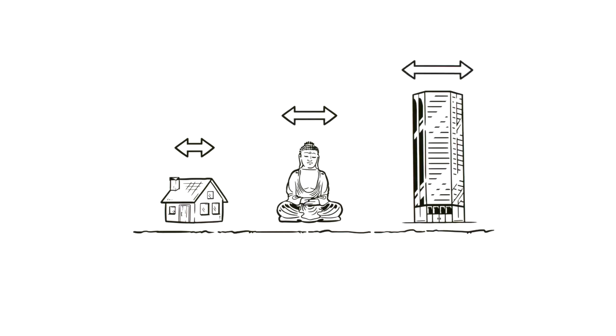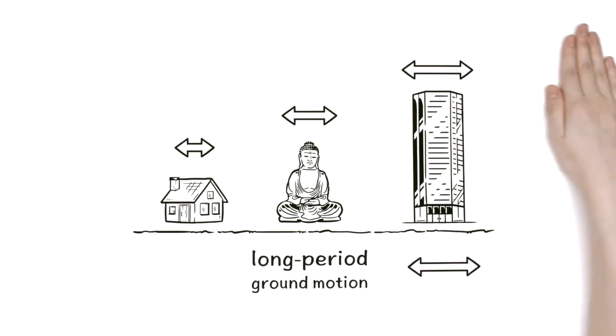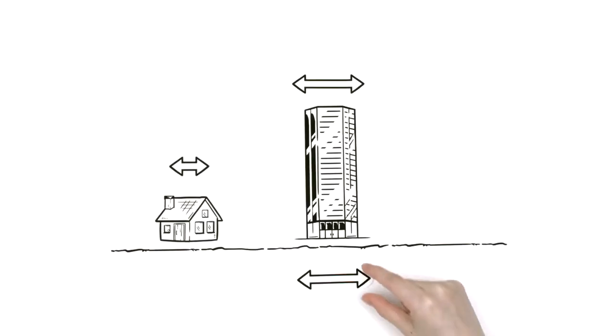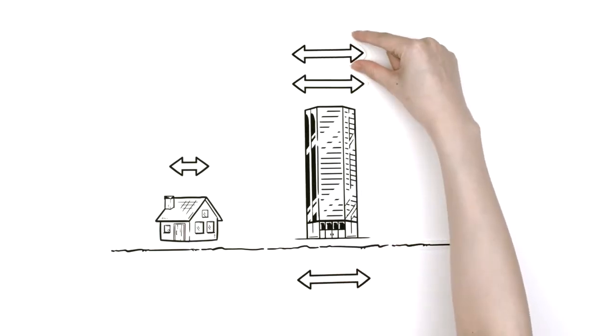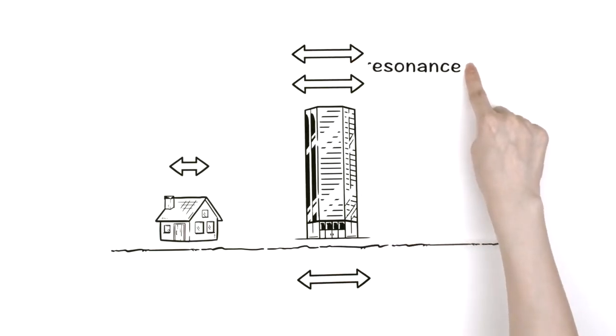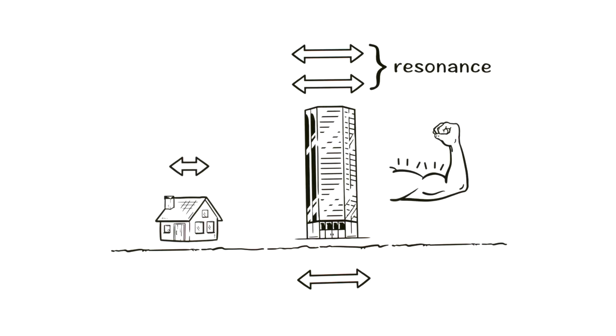Each building has its own period, which depends on the type of construction and height. Higher buildings have longer periods, and these are more likely to be the same as the ground motion. When a building's period is the same as that of the ground, this causes resonance, which greatly magnifies the shaking.